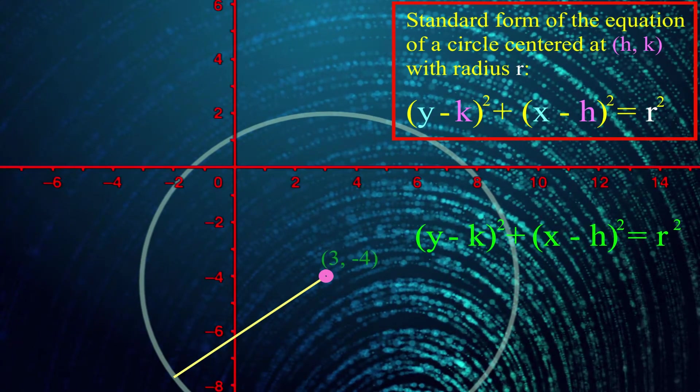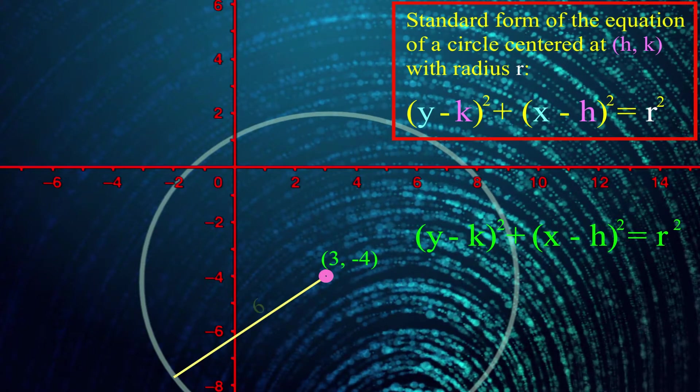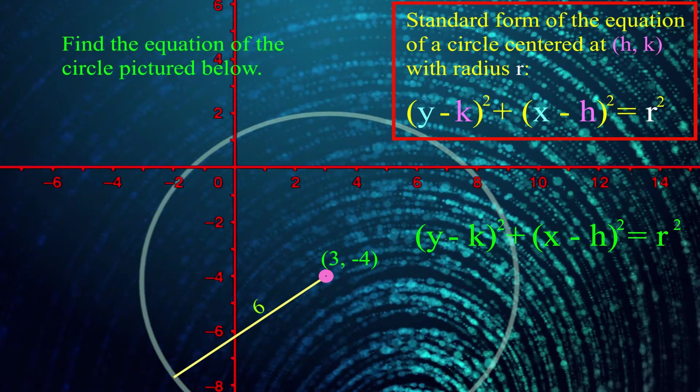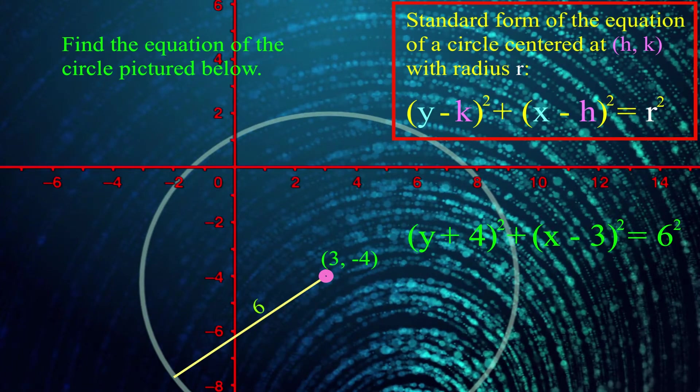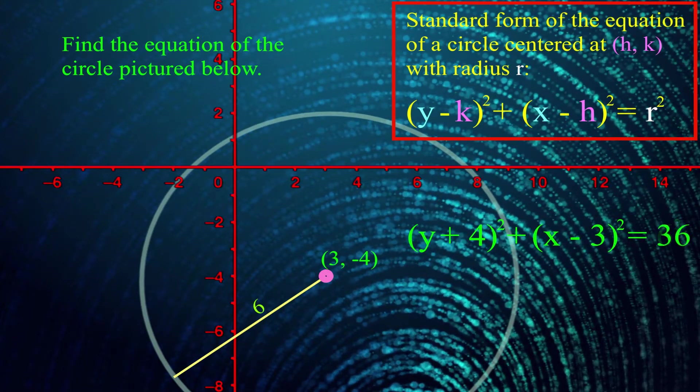This circle appears to be centered at (3, -4). And the radius is 6. So all we've got to do is put 3's, negative 4's, and 6's in their appropriate spot in our standard form of the equation of the circle. That's it!